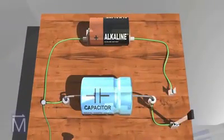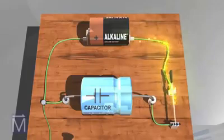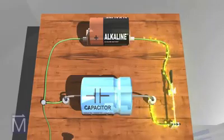First we need to charge a capacitor. By closing the switch, we create a circuit that includes both the capacitor and the battery. Electrons flow from the battery to the capacitor, where they are stored.